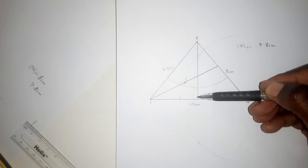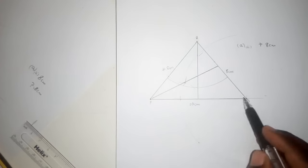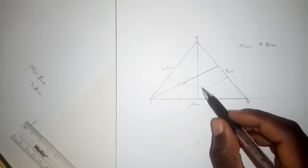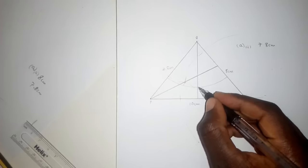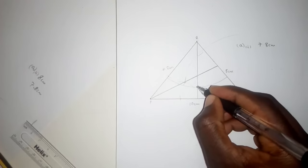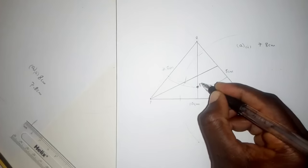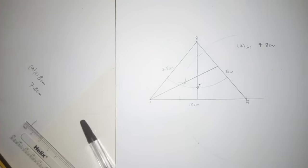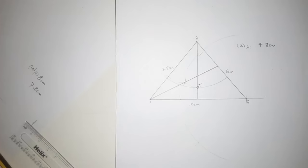Point T is 5 centimeters from R and equidistant from P and Q. The point is where the arc and the perpendicular bisector of PQ meet. Label that intersection point T.